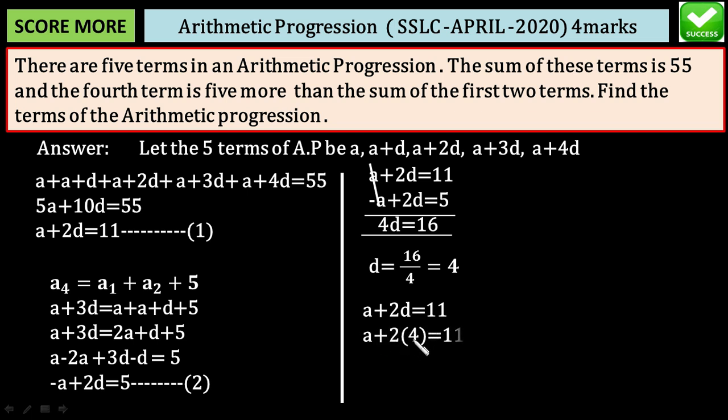A+2d=11 is equation 1. Substitute d=4. A plus 2 times 4 is 8 equals 11. Shift 8 to the right side, we get a=11-8=3. So d=4 and a=3.